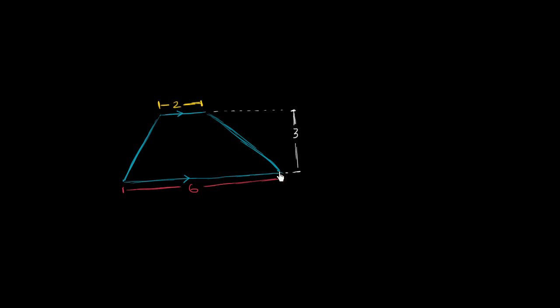So right here, we have a four-sided figure, or a quadrilateral, where two of the sides are parallel to each other. And so this, by definition, is a trapezoid. And what we want to do is, given the dimensions that they've given us, what is the area of this trapezoid?